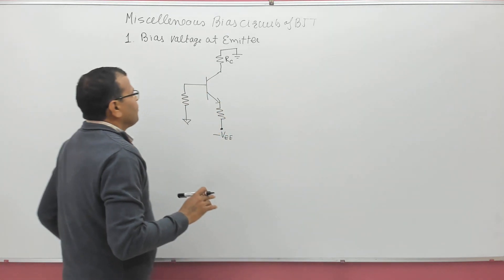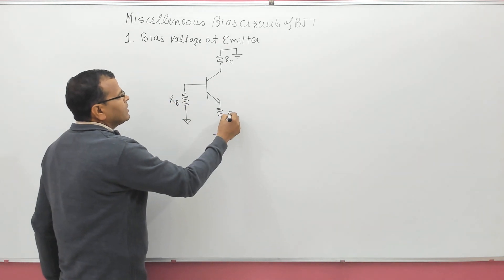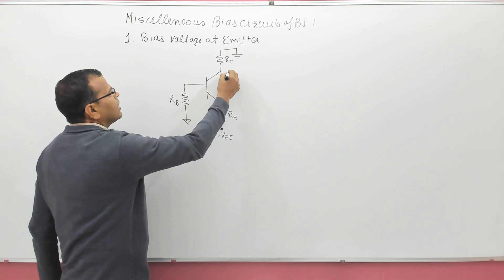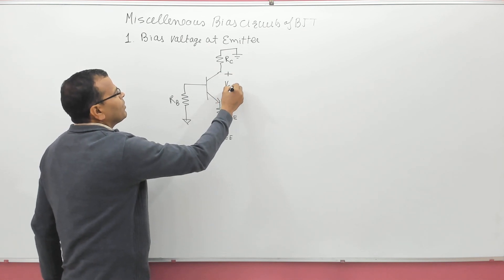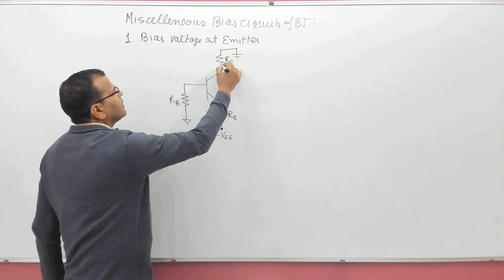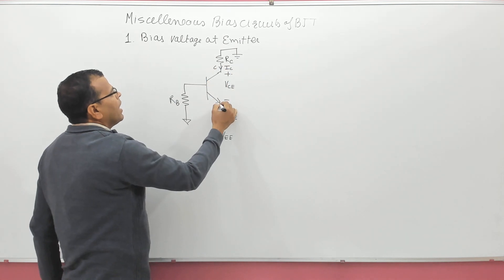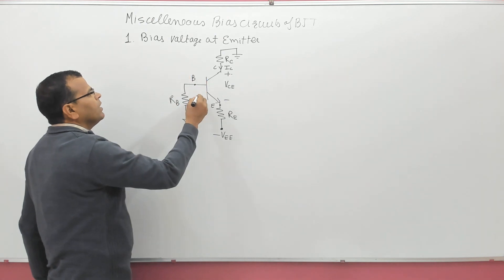Now, suppose this resistance is RB, this resistance is RE, this resistance is RC. The voltage from collector to emitter is VCE. The current entering at the collector terminal is IC. This will definitely be the collector terminal, and the terminal at which the arrow is there is the emitter terminal; this is the base terminal.